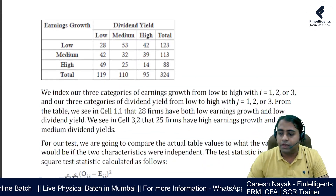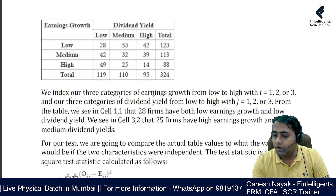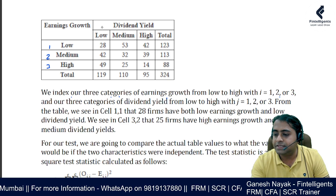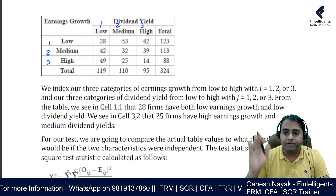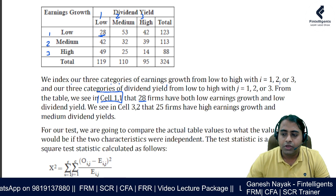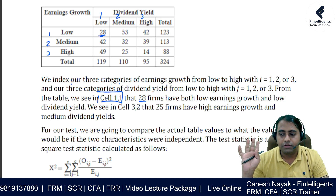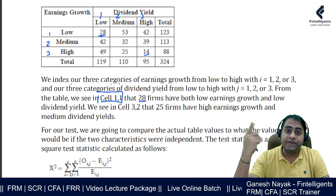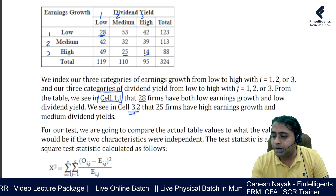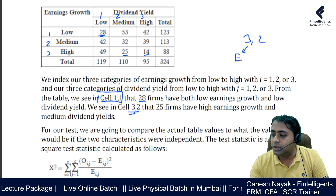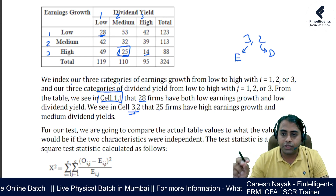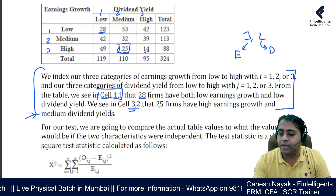The contingency table has three categories of earning growth (rows: low, medium, high) and three categories of dividend yield (columns: low, medium, high). For example, cell (1,1) shows 28 companies with both low dividend yield and low earning growth. Cell (3,3) shows 14 companies with both high earning growth and high dividend yield. Cell (3,2) shows 25 companies with high earning growth but medium dividend yield. The test uses a chi-square test statistic.